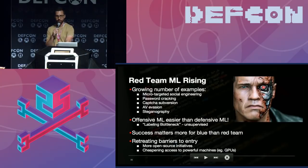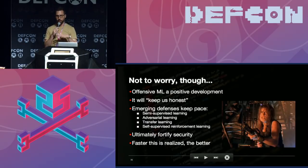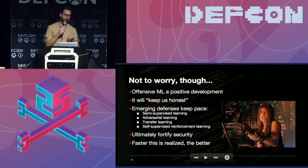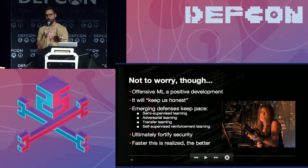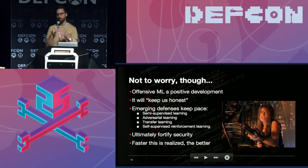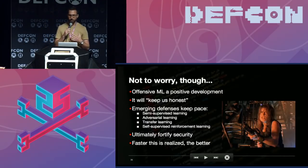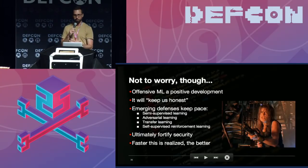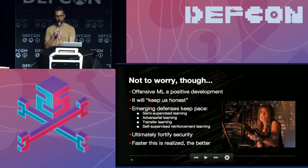I don't want to worry people here. I think red team machine learning and offensive machine learning is a positive development for the community. It's going to keep us honest. If you apply statistics and make the attack more statistical in nature, it's going to make your defenses more robust and fortify them in the long run. I think people like Elon Musk who tend to be more fear-mongering about AI might have other ulterior motives. But in the long run for security, this is going to be a really, really nice development that's only going to improve security.